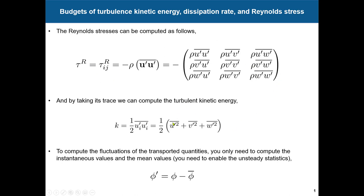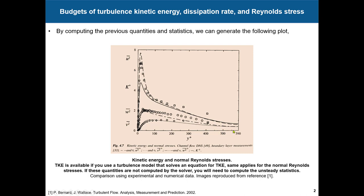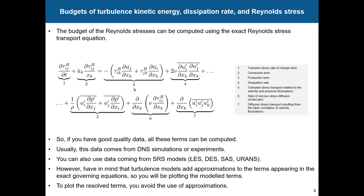What can you do using this information? You can make these plots, which are very important — we have seen this in the theory. We have here the normal Reynolds stresses plus the turbulent kinetic energy. You can make plots like this to see the behavior. The Reynolds stresses and turbulent kinetic energy tend to peak somewhere in the buffer layer. When you get this data, you will see something similar.